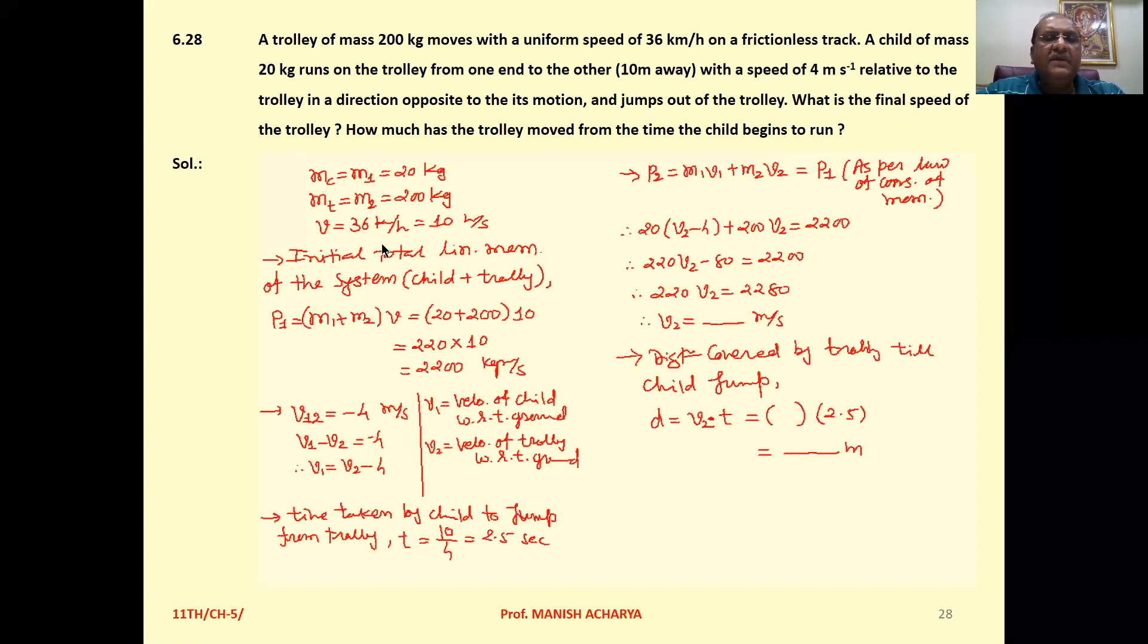Now, the mass of the child, M1, is 20 kg. The mass of the trolley, M2, is 200 kg, and the speed is 36 km per hour, which is 10 m per second.